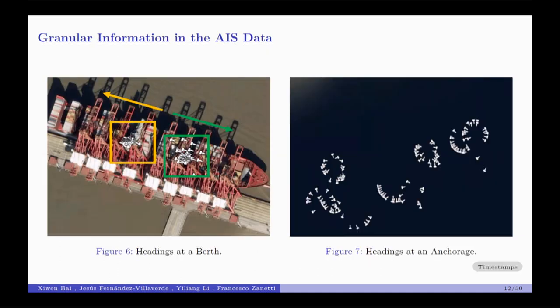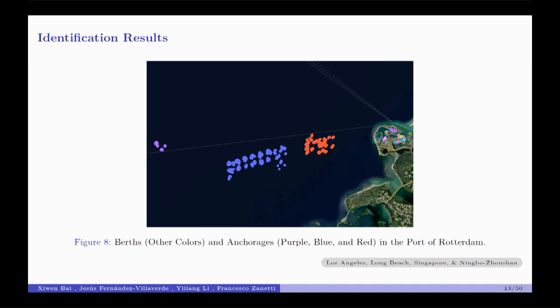We look at granular information such as the headings of container ships at a berth. When a ship is docking to load and unload cargo, you can expect the headings to be either aligned or 180 degrees opposite. But for ships at an anchorage — a random area outside the port — it's difficult to maintain closely aligned headings because winds and tides make the ships unable to stay in a particular location for a long time. They appear in random heading orientations.